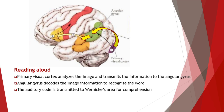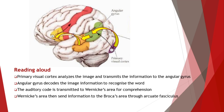Wernicke's area understands the word and sends the information to Broca's area through the left arcuate fasciculus. Broca's area then makes a plan for reading and sends it to the motor cortex. The motor cortex then sends impulses to the muscles of articulation and the person reads aloud. That is how it works when a person reads aloud.